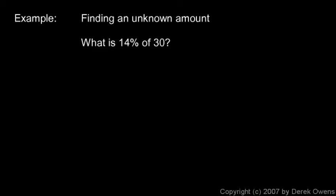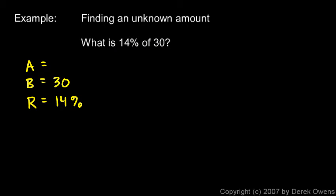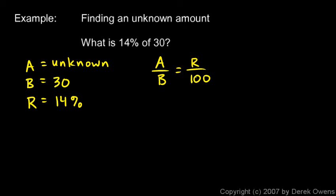In this example, the amount is unknown: what is 14% of 30? The rate is 14%, the base is 30 (the total), and the amount is what we don't know. We set up the percent proportion: a/b = r/100.